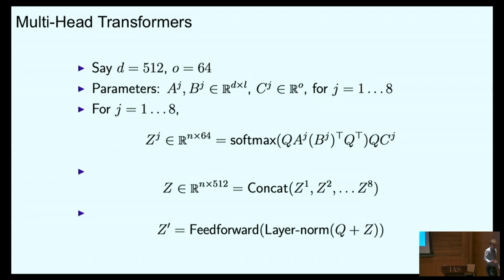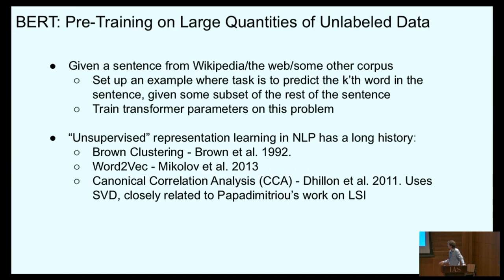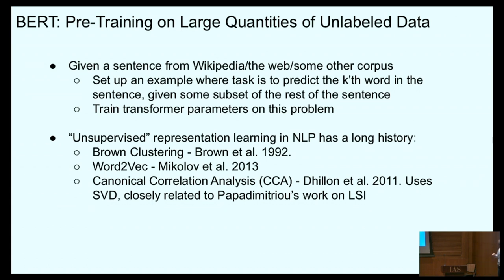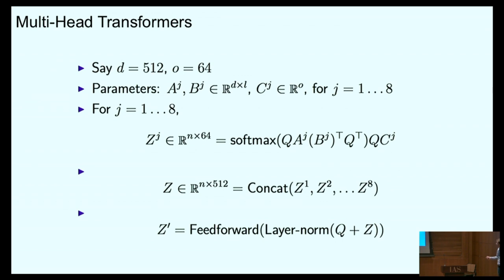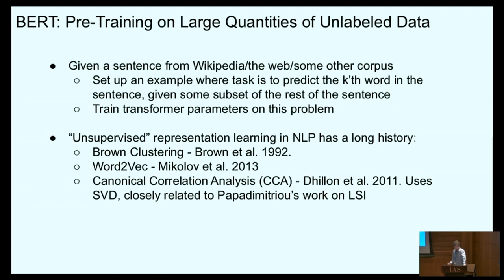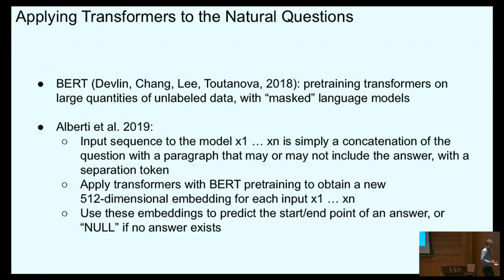This is one iteration: you take one sequence of embeddings and produce another sequence of contextually dependent embeddings. You can iterate this process — the latest models might iterate this tens of times, producing increasingly deep representations under these transformers. That leads us to BERT. The second critical idea is that you can pre-train the parameters of these transformer models using very large amounts of unlabeled data. The idea is to mask out some random subset of words in the input sentence and train the parameters via backprop to predict each masked word. This converts unlabeled data into a supervised problem and pre-trains all the parameters — the projection matrices A, B, and C — on very large amounts of unlabeled data.